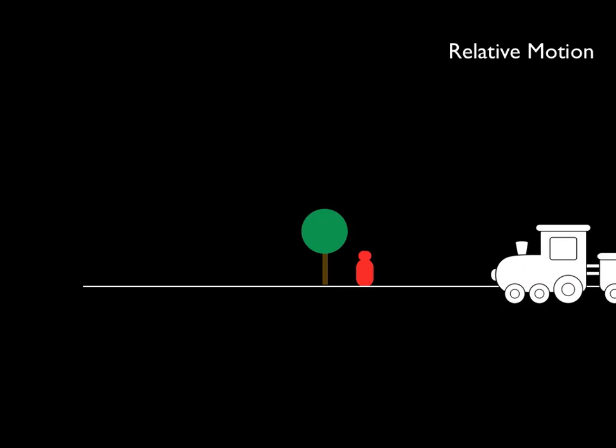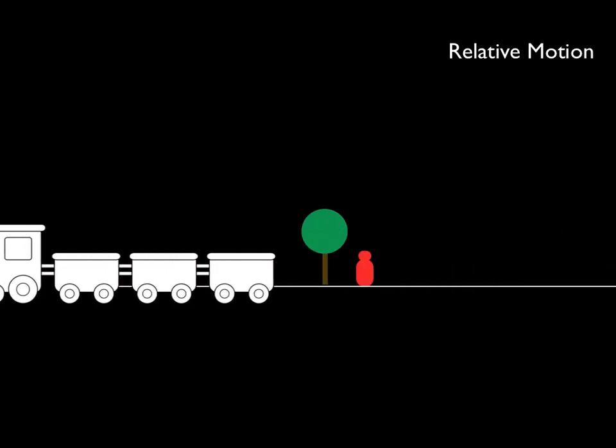This is an example of relative motion. Just like a person on a train sees the landscape whooshing by.